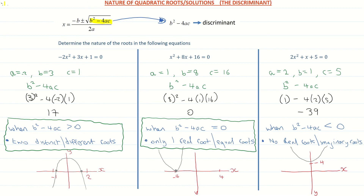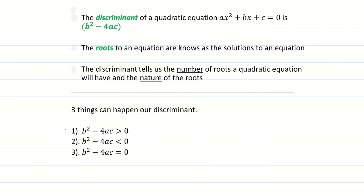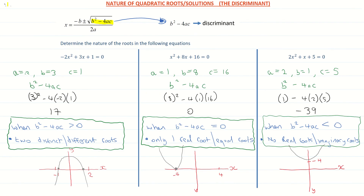Let's recap the three scenarios. When b squared minus 4ac is greater than 0, the equation has two distinct roots. When b squared minus 4ac equals 0, it has one distinct real root. When b squared minus 4ac is less than 0, it has no real roots — only imaginary roots. The discriminant of a quadratic equation is given by b squared minus 4ac, and the roots are the solutions where the equation cuts the x-axis.